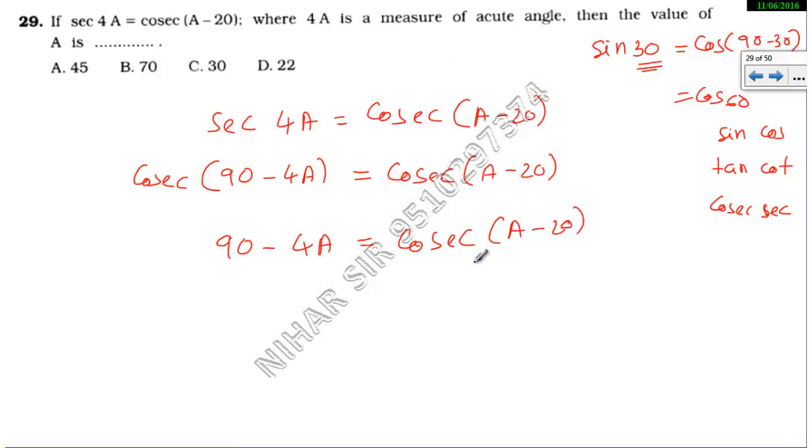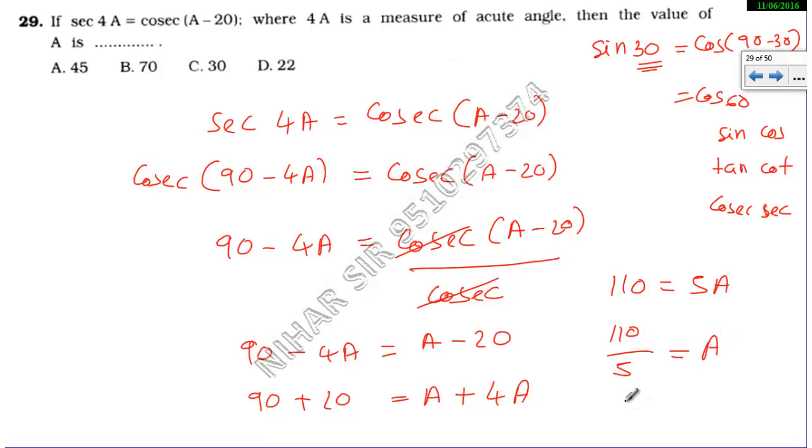Cosec cancels out. So what remains: 90 - 4A = A - 20. Now 90 + 20 = A + 4A. When -20 comes to this side it becomes +, when -4A goes to that side it becomes +4A. So 110 = 5A. 110/5 = A. 22 = A. So my answer is D, 22.